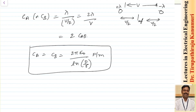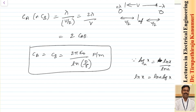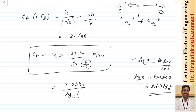In power system courses, the formula is often expressed using log base 10 rather than natural log. Using the conversion ln(x) = ln(10) × log₁₀(x), and substituting values, the capacitance per conductor becomes C_a = C_b = 0.0241 / log₁₀(d / r) microfarads per kilometer length.